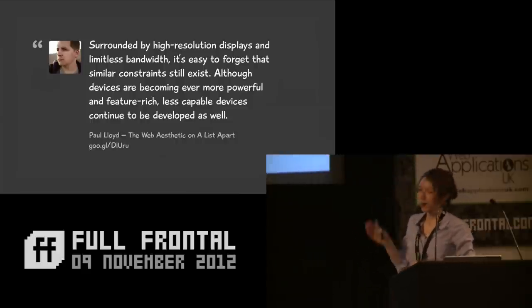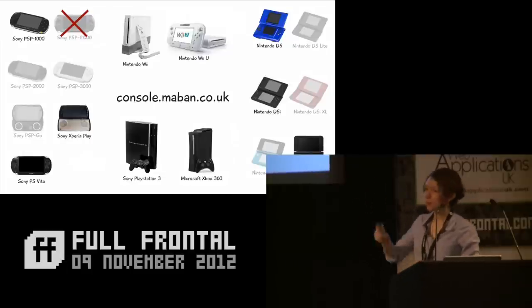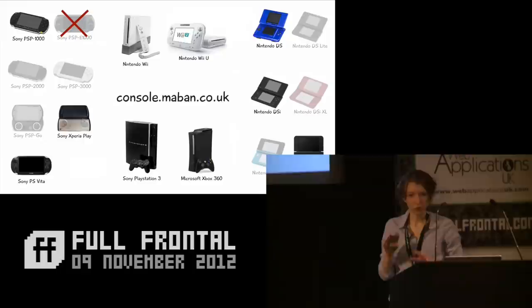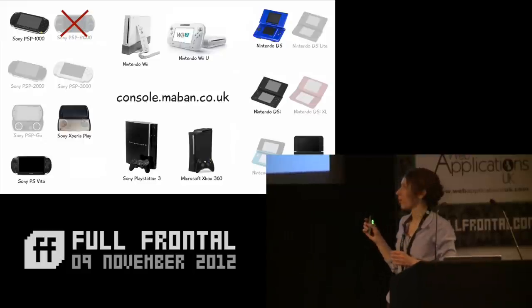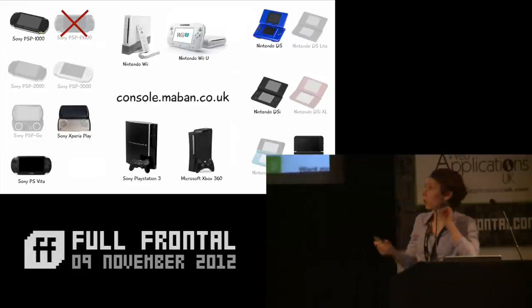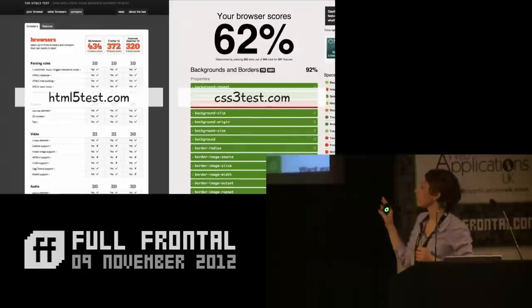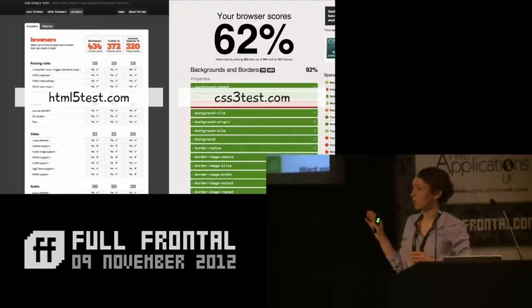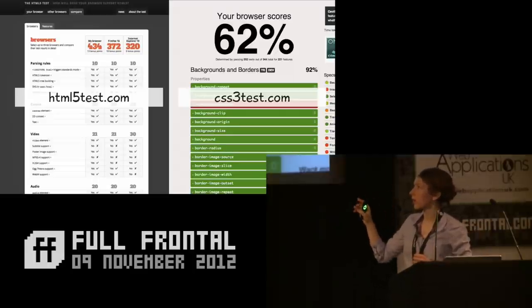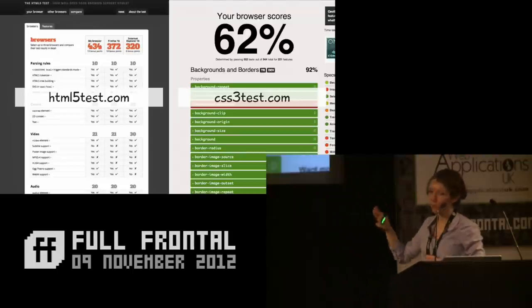These are the most popular consoles available today. I faded out the ones I haven't tested, and crossed out the PSP-E1000 because it doesn't have internet capabilities. I don't have time to show all the devices, so I'll focus on the latest ones — older ones are available on my website. I'm using the HTML5 test and CSS3 test as benchmarks for browser support. My version of Chrome on desktop scored 434 out of 500 on the HTML5 test and 62% on the CSS3 test.